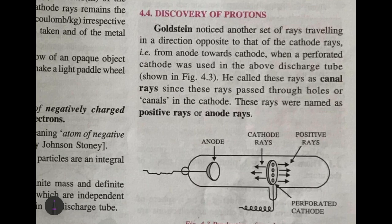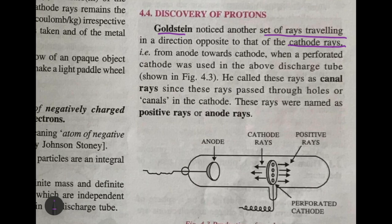The chemists realized that only negative charge is not present in an atom, because an atom is electrically neutral. So to balance those negative charges, some positive charge must also be present. They kept on experimenting, and finally Goldstein noticed another set of rays traveling in the direction opposite to that of the cathode rays — traveling from anode towards the cathode.